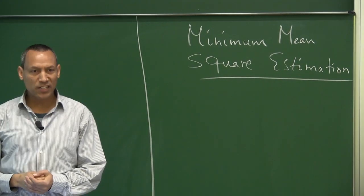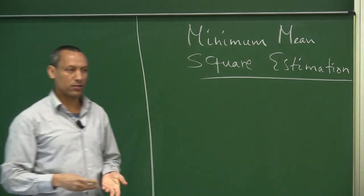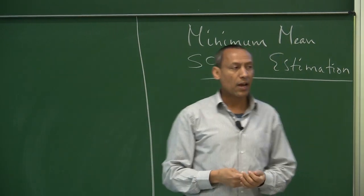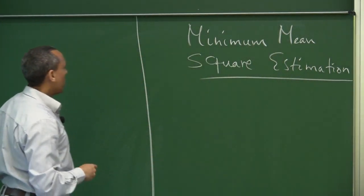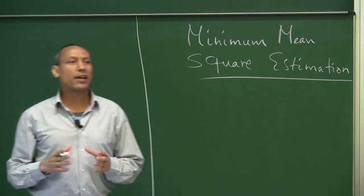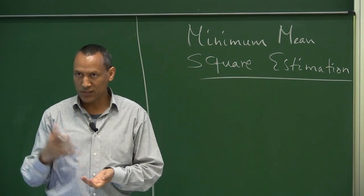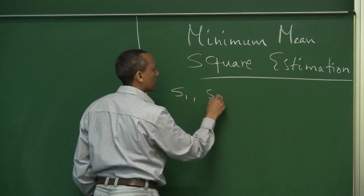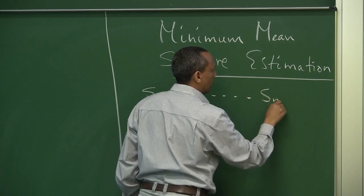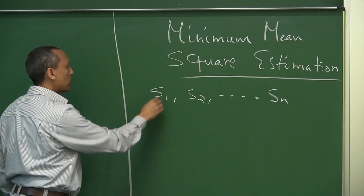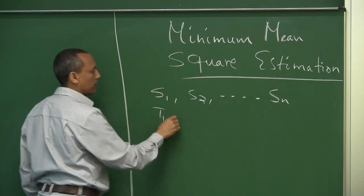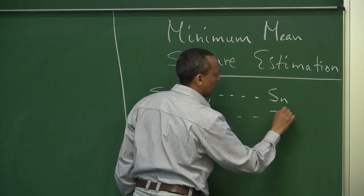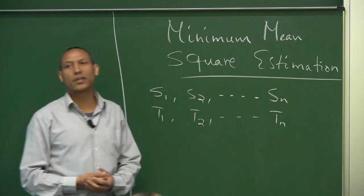We begin this lecture by summarizing what we have discussed so far. Suppose we have taken a sample of some random variable — let's say we have n samples. This sample was taken at time t1, this was taken at time t2, and this was taken at time tn.